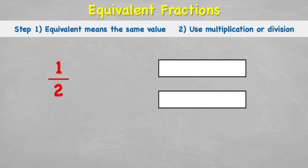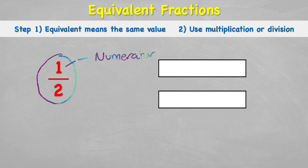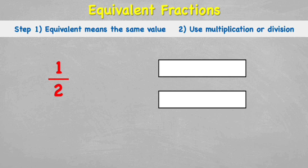The first thing to learn is what our two numbers are called on a fraction. If we look at one half, the number on the top — in this case a one — is called our numerator, and the number on the bottom is called our denominator. Understanding these two terms right at the start is really important. An equivalent fraction holds the same value but will have different-looking numerators and denominators.